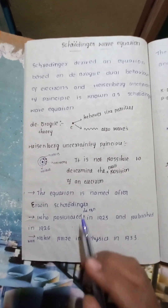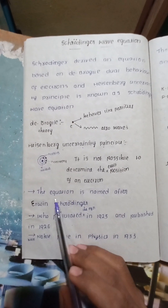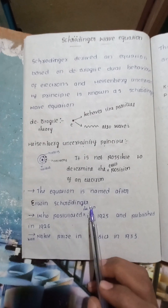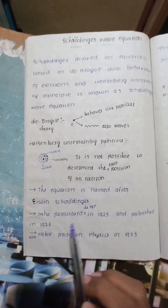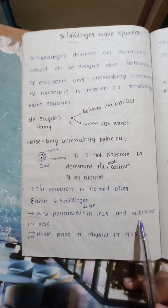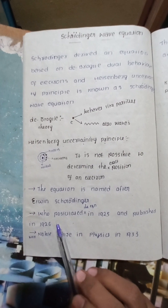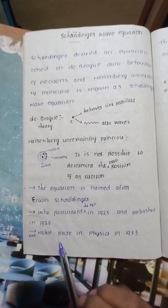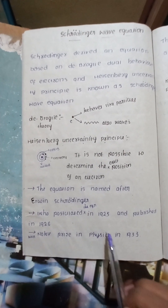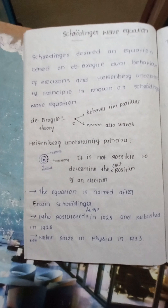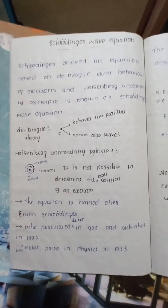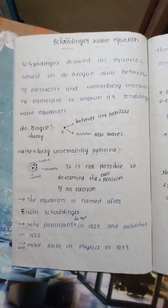This is the Schrödinger wave equation. The equation is named after Erwin Schrödinger, who postulated the equation in 1925 and published it in 1926. He won the Nobel Prize in Physics in 1933. That's the basic historical information about this equation.